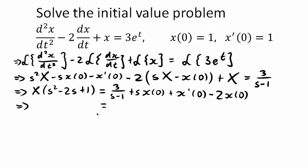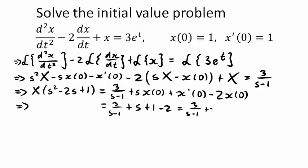Simplifying the right-hand side: we have 3 over (s - 1), then s times x(0) — since x(0) = 1, that's just plus s. The derivative x'(0) = 1 gives plus 1. And minus 2 times x(0) gives minus 2. So the right-hand side simplifies to 3/(s - 1) plus s minus 1.